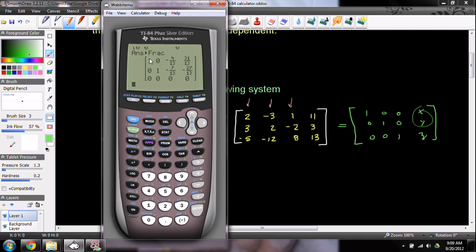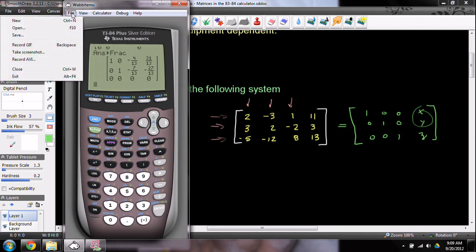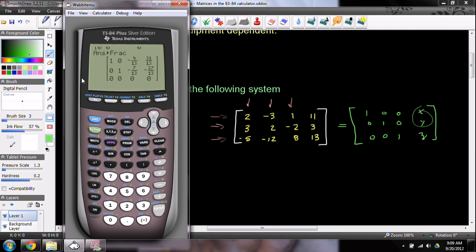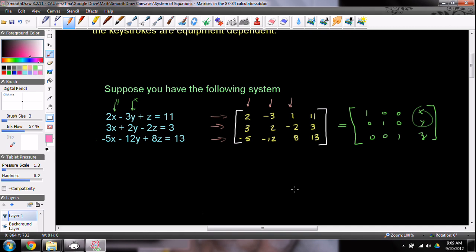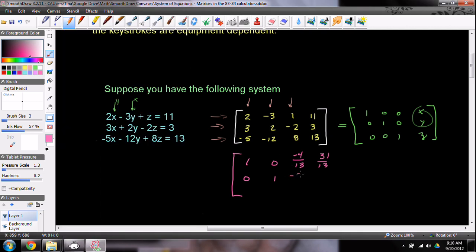So we were hoping for ones down the diagonal. And as we look, we get 1, 1. Uh-oh. We don't have a one. Okay. So we have to interpret this. Let's go ahead and write down our answer matrix. So we're going to have 1, 0, -4/13, 31/13. We have 1, 0, -4/13, and 31/13. On the next row, we had 0, 1, and then we had -7/13, -27/13. So -7/13, -27/13. And if you notice, the bottom row is just all zeros. 0, 0, 0, 0.